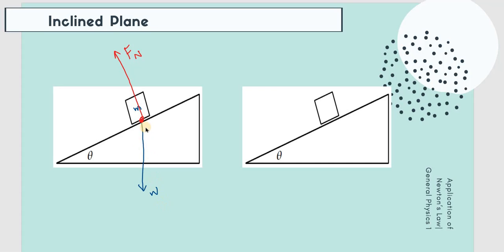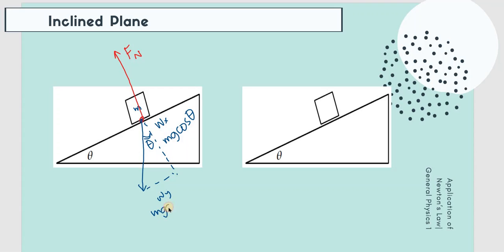We can extract the components of the weight. The value of theta here will be equal to this theta. This side will be the adjacent side, so we use mg cosine of theta — that's W sub x, equal to mg cosine theta. This side will be the opposite side — that's W sub y, opposite to theta, so that will be mg sine of theta. That's how you solve the y component.